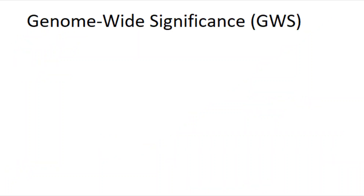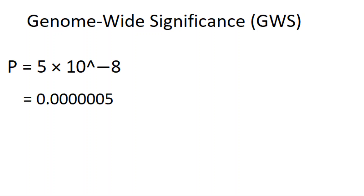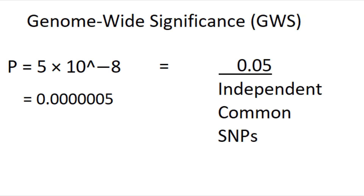Researchers usually correct for the multiple testing problem by instead using a genome-wide significance threshold, which is normally accepted as p < 5 × 10⁻⁸. This number is arrived at by dividing the traditionally accepted significance threshold of 0.05 by approximately the number of independent common SNPs across the human genome.